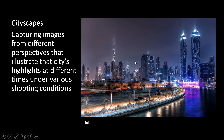Cityscapes are basically about capturing images from different perspectives and illustrating the character of a city — under different shooting times, different lighting conditions, various atmospheric conditions, and from various perspectives. It's basically the landscape but with lots of buildings in it.